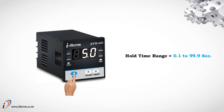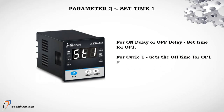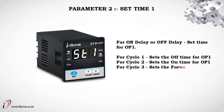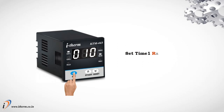Hold time range: 0.1 to 99.9 seconds. Parameter 2: set time 1. For on delay or off delay, sets the time for output 1. For cycle 1, sets the off time for output 1. For cycle 2, sets the on time for output 1. For cycle 3, sets the forward time for output 1. Set time 1 range: 0.01 seconds to 999 hours, depending on range 1.